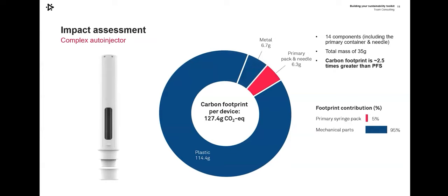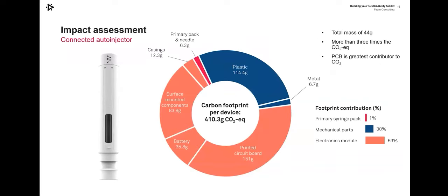We now move on to a more complex auto injector — something with a spring in it and a syringe hidden inside the device. Again, we've got the primary pack, and then a slightly larger mass of plastic and metal wrapped around it. The additional mass leads to a higher carbon footprint — we've moved from something around 8 grams to something that's 35 grams, and our carbon footprint has increased up to almost 130 grams of CO2. So we've got something that's quite a lot more impactful on the environment, though being an auto injector rather than a safety system it also adds a lot of extra functionality that many users will find beneficial.